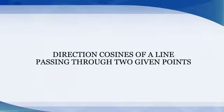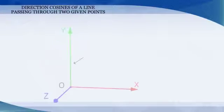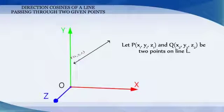Direction cosines of a line passing through two given points. Let P(x1, y1, z1) and Q(x2, y2, z2) be two points on a line L.